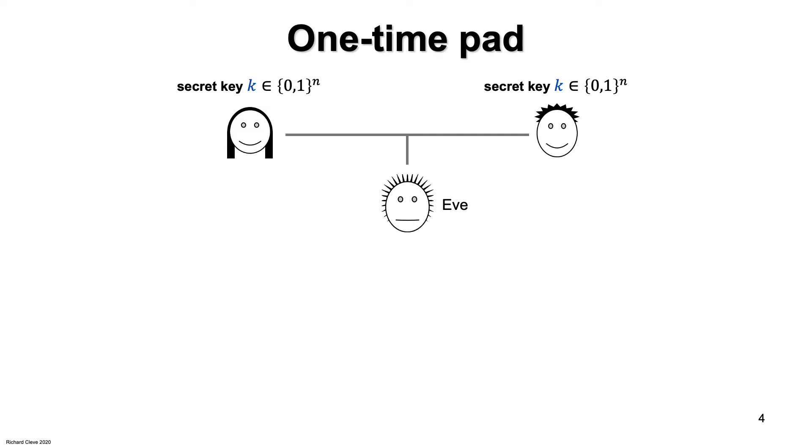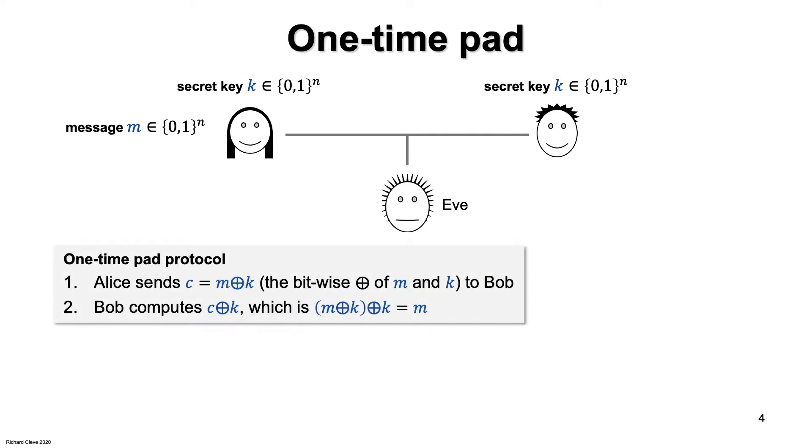Alice communicates an n-bit message m to Bob in the following manner. Alice computes the bitwise XOR between m and k. Call the string C, the ciphertext. Alice sends C to Bob over the channel so both Bob and Eve get to see what the bits of C are. And then Bob computes the bitwise XOR of C and k. The result is m because, effectively, each bit of m gets XORed with the same bit twice. So Bob acquires m.